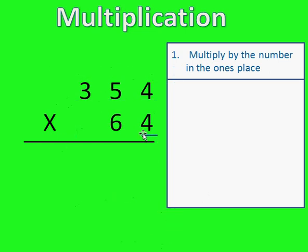So the first one we go four times four. And four times four is sixteen. So I put my six down here. And just like with addition I put the one in my tens place for the number sixteen up on top of the number in my tens place.